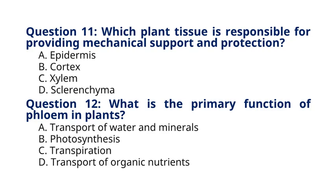Question 12. What is the primary function of phloem in plants? A. Transport of water and minerals. B. Photosynthesis. C. Transpiration. D. Transport of organic nutrients. The correct answer to question 12 is option D. Transport of organic nutrients.